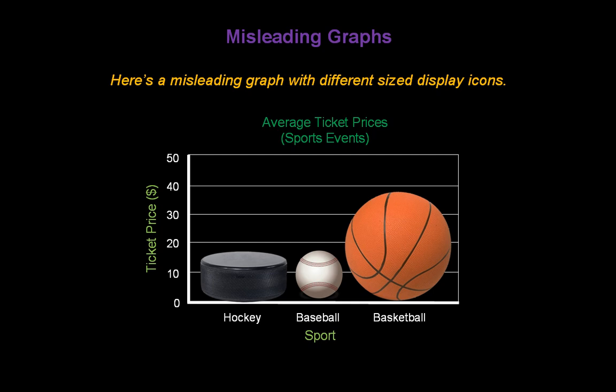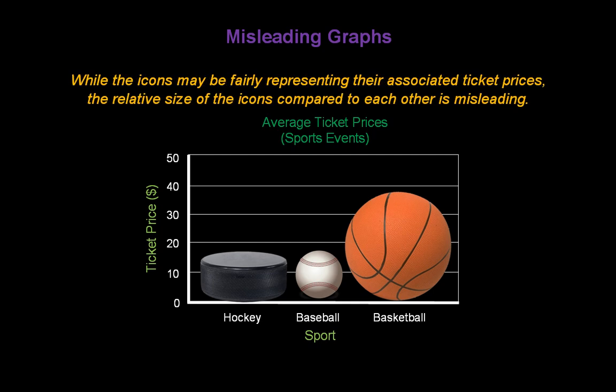Here's a misleading graph with different sized display icons. We're comparing the average ticket prices for three sporting events: hockey, baseball, and basketball. While the icons may be fairly representing their associated sport and ticket prices, it's the size of the icons compared to each other that's misleading. The top of the basketball may represent $38 to get in, and the top of the hockey puck and baseball may represent $18 for those events.